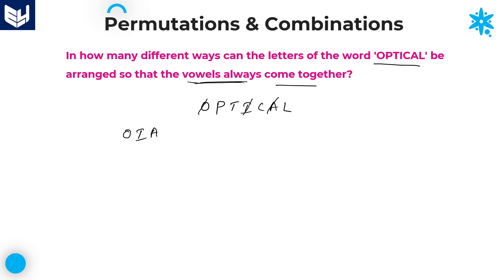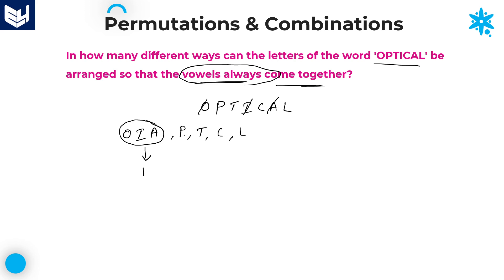According to the given question, all vowels come together, meaning you need to take all three vowels as a single entity. The remaining consonants are P, T, C, L. Now count the number of letters: 1, 2, 3, 4 consonants plus 1 single entity — altogether total five. Five letters can be arranged in 5 factorial ways, but that is not your final answer.